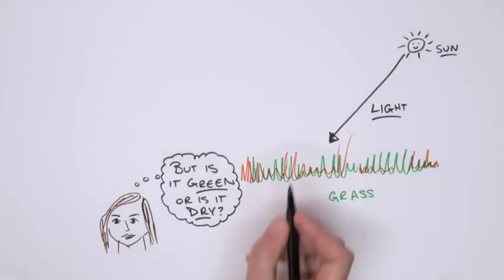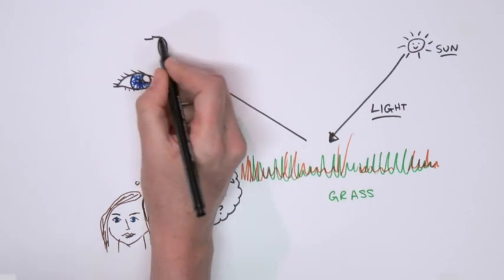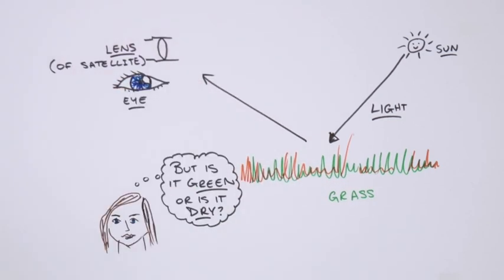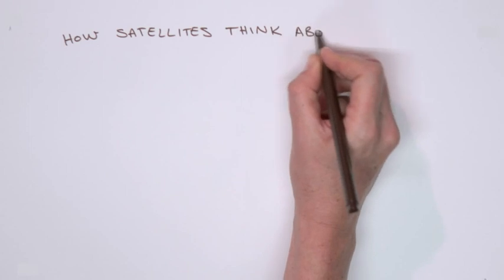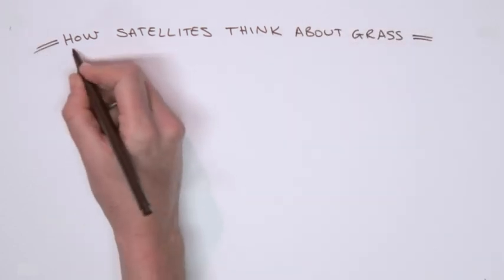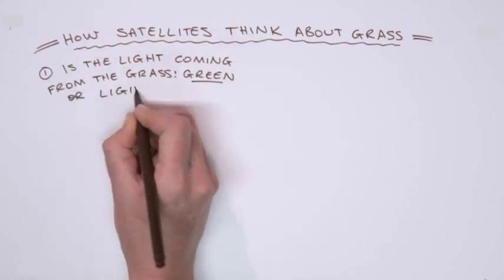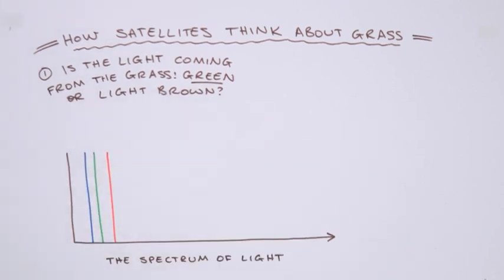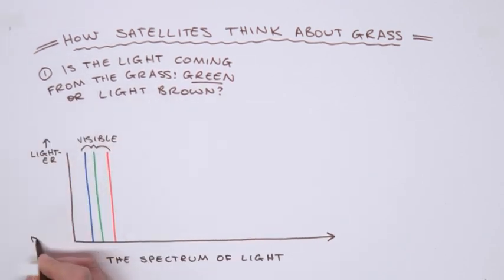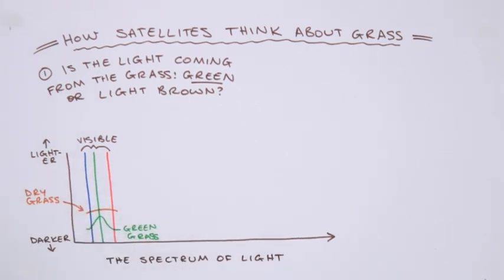The satellite observes the grass like we do. Sunlight reflected from the grass is observed by our eyes or by the lens of the MODIS sensor. Like the human brain, the satellite receiver compares the amount of living grass with the amount of dry grass. We can do this by analysing the light reflected off the grass. Living grass is more green, whereas dry grass is a lighter brown, as the signature of dry grass has a more even mix of red, green and blue wavelengths.